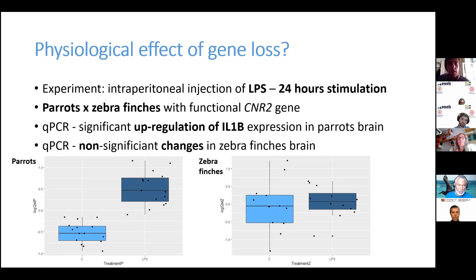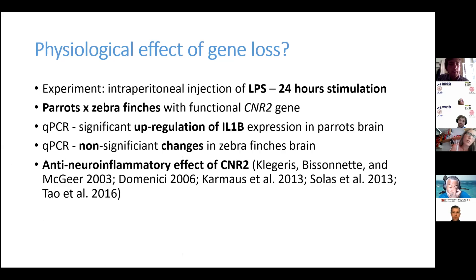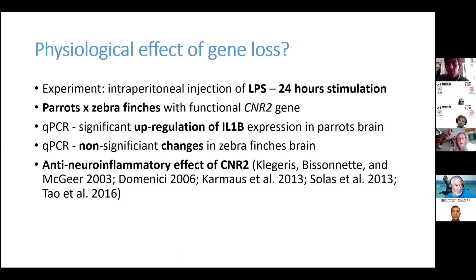It is possible that this is because parrots are missing the CNR2 gene. As I should mention, CNR2 receptors also occur in the brain in microglia, which are basically the immune cells of the brain. This is also supported by Karmouse et al. 2013, where they inoculated mice with a pathogen, and the mice had the CNR2 gene knocked out. In those mice, much more immunopathologies were observed than in the control ones.